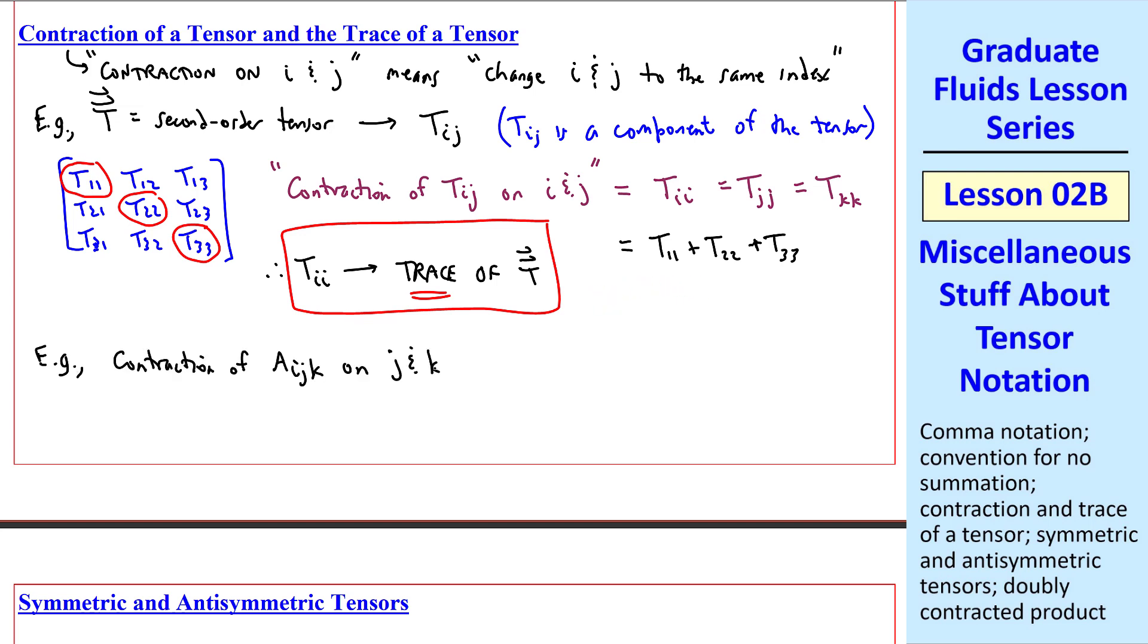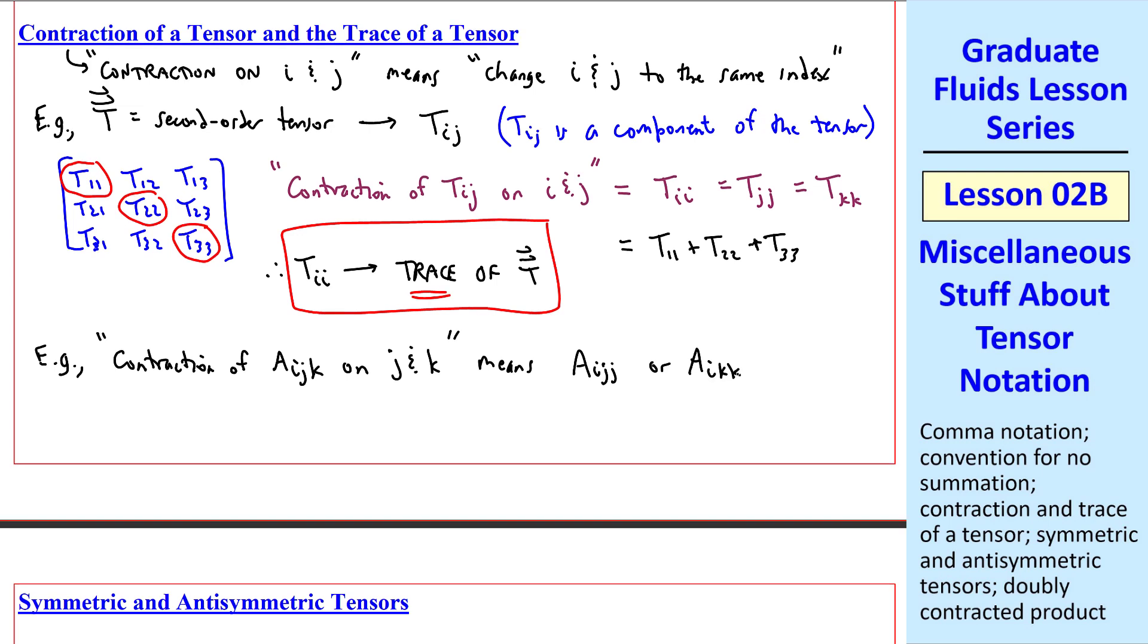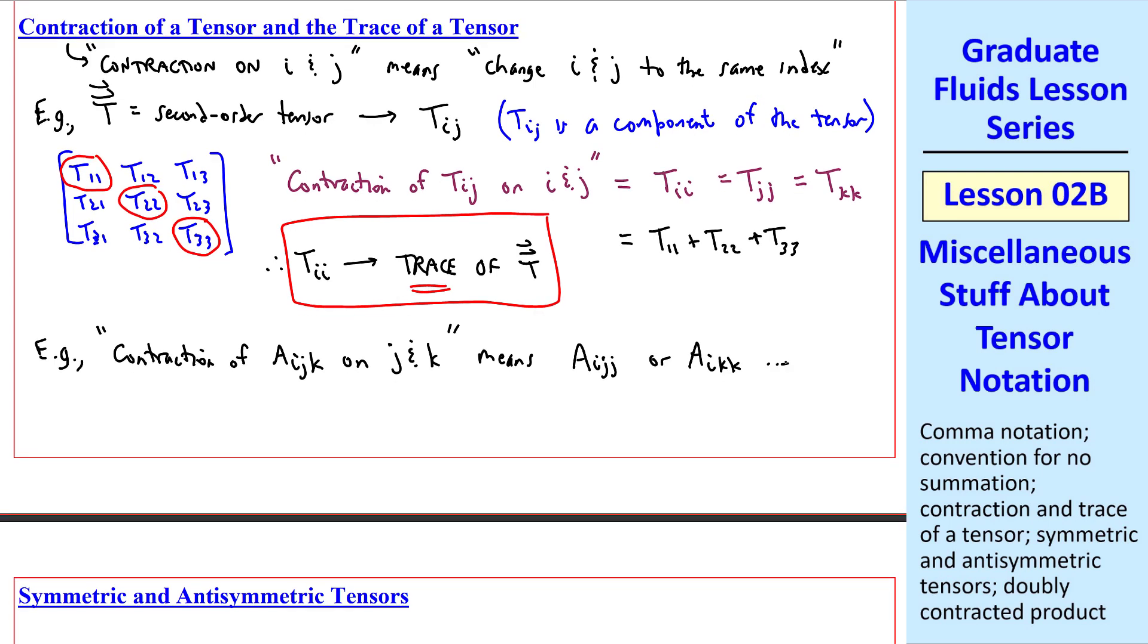As another example, suppose we're contracting ajk, a third-order tensor, on j and k. This means, according to our definition, we set j and k to the same index. So we can write aijj, or aikk, etc. We cannot write aiii, though, as this would violate our tensor notation rules.